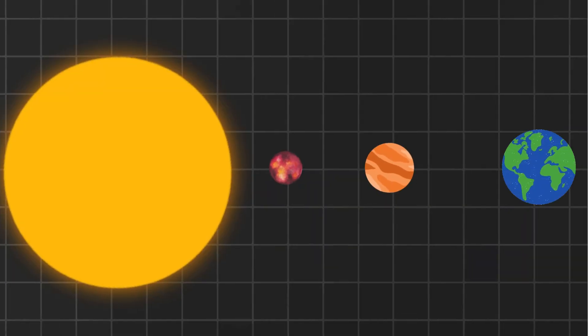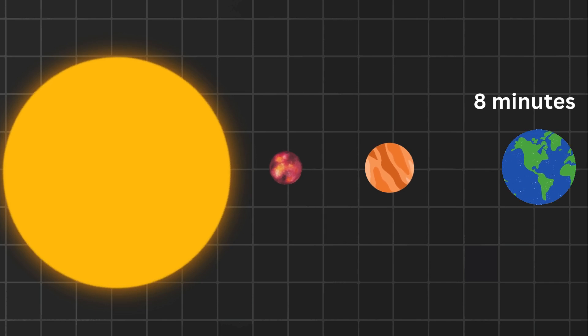And here we are. Earth. Sunlight takes 8 minutes and 20 seconds to reach us. So, if the sun suddenly vanished, don't worry, it won't. We wouldn't even know for over 8 minutes.